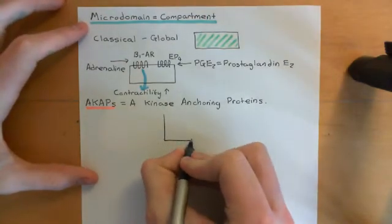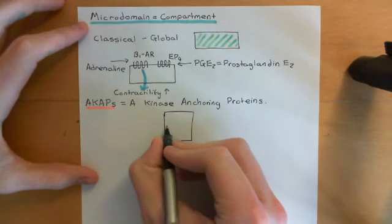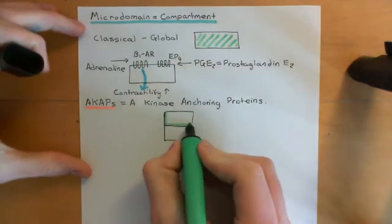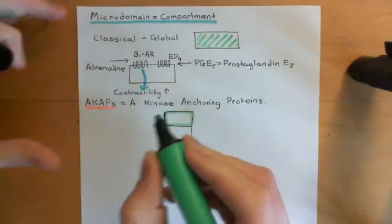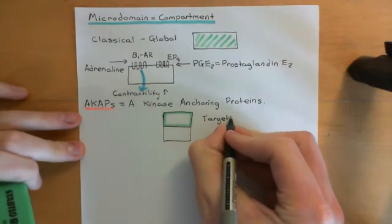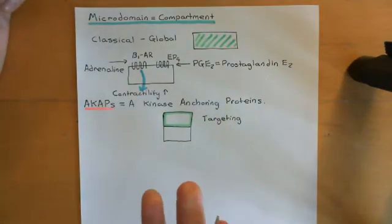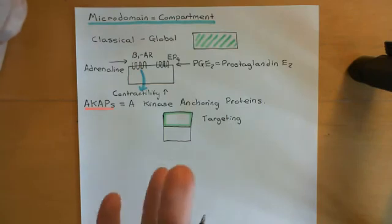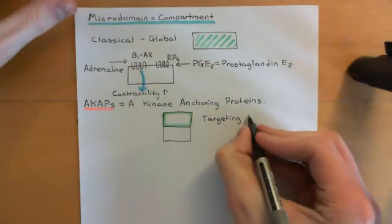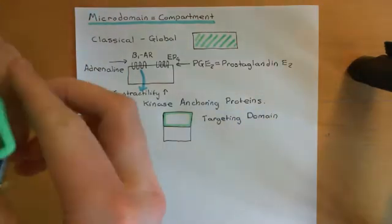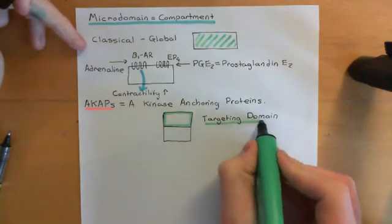A-kinase anchoring proteins can be divided broadly into just two domains. One of these domains is the targeting domain. This domain binds to other proteins of the cell. Alternatively it might bind to lipid membranes, or might have lipid moieties attached onto it to anchor it in other membranes. The basic principle is that this targeting domain determines where the A-kinase anchoring protein is actually located within the cell.